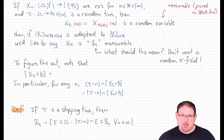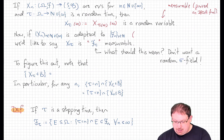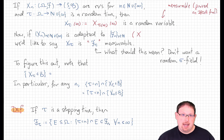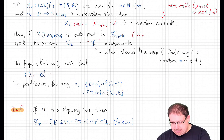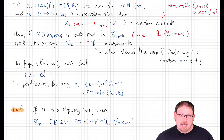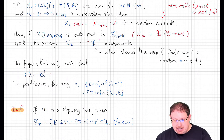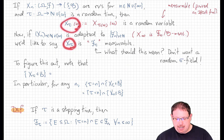Now suppose that our x_n wasn't just any sequence of random variables, but was actually an adapted stochastic process. In this case, if we're including x_infinity, what that means is that in addition to x_n being F_n measurable, x_infinity is F_infinity measurable. Since x_n is F_n measurable for each n, we'd really like to establish some kind of sigma field F_tau that describes the measurability class of this stopped random variable x_tau.